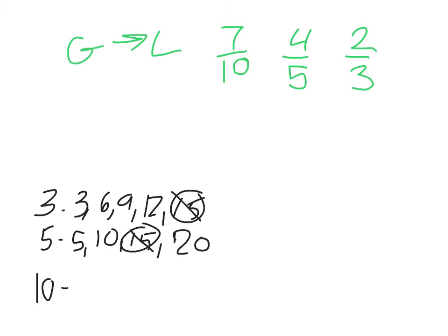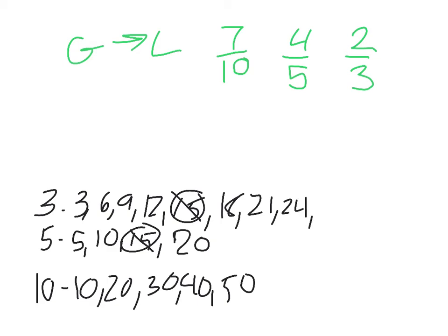So, I know this goes ten, twenty, thirty, forty, fifty. Let me extend out my threes a little bit more. So, eighteen, twenty-one, twenty-four, twenty-seven, thirty. So, I see a thirty there, and I see a thirty there. I know five will go into it, because all my multiples of five end in five or zero.